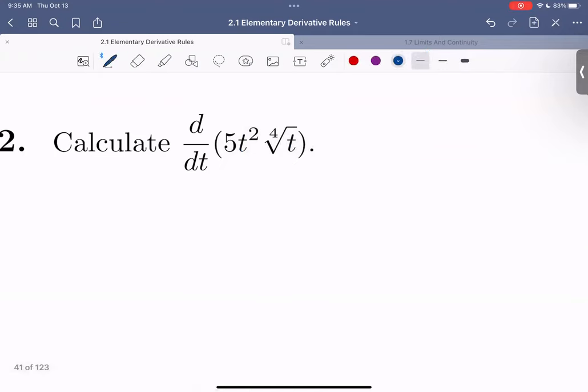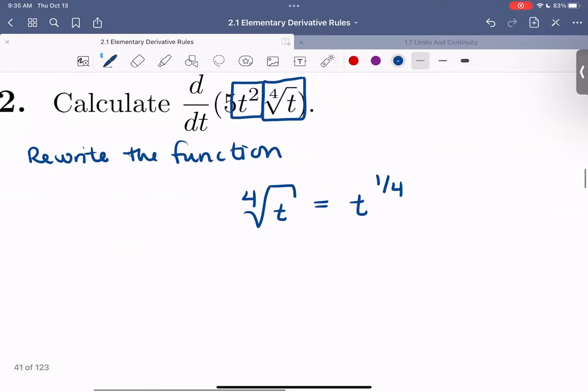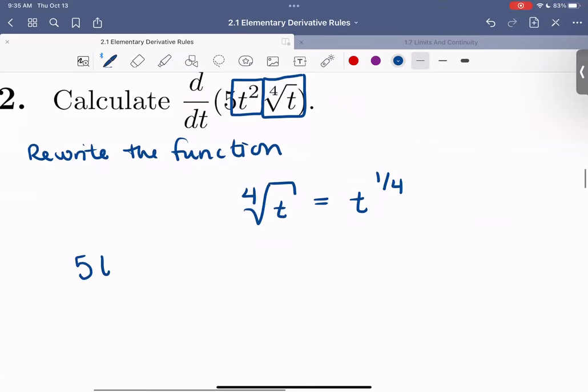First, rewrite the function. t² is fairly simple as is, but 4th root of t, how would we rewrite that? Using exponent properties, a 4th root written like this is equivalent to a power of 1/4.